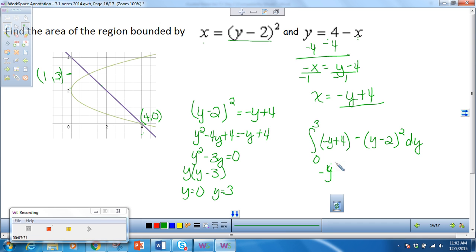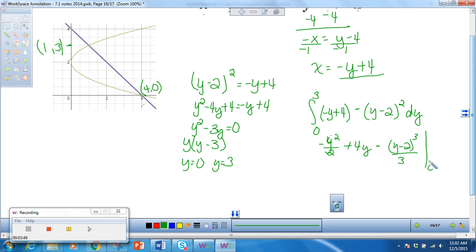So integrating this, I get negative y squared over 2 plus 4y minus. Integrating this using u substitution, this will give me y minus 2 cubed over 3. And then I would integrate that from 0 to 3. So that's negative 9 halves plus 12 minus 3 minus 2 is 1. So minus a third. And that's our answer.